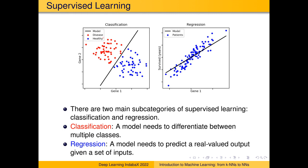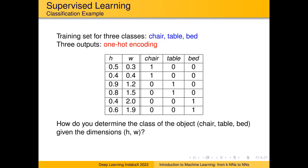Let me do a quick example to build intuitions. We have furniture descriptions — every piece of furniture has some height and some width. You are asked to predict the type: chair, table, or bed. Do you think it's possible to predict the type based on just height and width? Also note that the outputs are one-hot encoded — a binary representation where for each class you have a separate bit in a bit string.